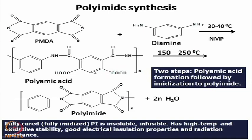In the second step, after the polyamic acid precursor is made, it is heated slowly to remove the solvent by evaporation. Then beyond 150 degrees, the amide group condenses with the carboxyl group, eliminating water — one H from NH and OH from the carboxyl — so two water molecules are eliminated and two imide rings are formed. This is the repeat unit formula of polyimide.